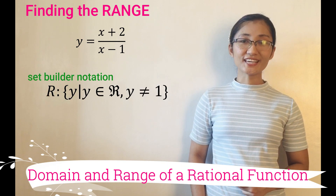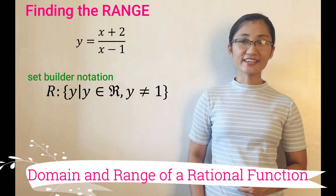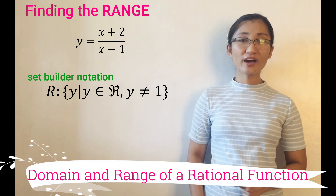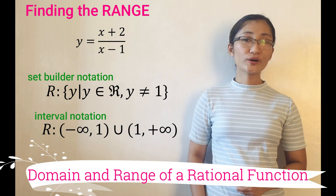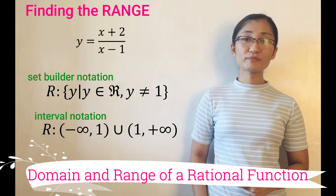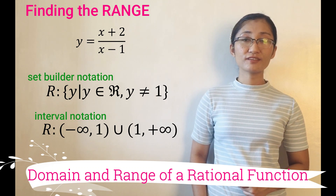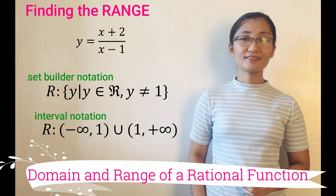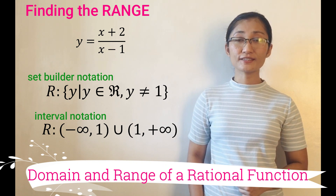In set builder notation, range is the set of y such that y is an element of real numbers but y is not equal to positive 1. Or in interval notation, range is the union of the intervals from negative infinity to positive 1 exclusive, and from positive 1 exclusive to positive infinity — that is, from negative infinity to positive infinity, excluding positive 1.